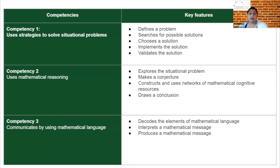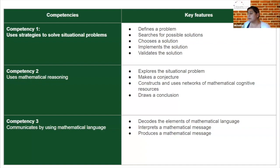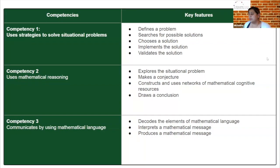Key features are the big headings of what's included in a competency. For Competency 1 - Uses strategies to solve situational problems - we're looking at defining a problem, searching a solution, choosing a solution, implementing the solution, and validating the solution. For Competency 2 - Uses mathematical reasoning - we're looking at the quality and detail of the thinking: exploring the situation, making conjectures, constructing and using a network of math cognitive resources, and drawing conclusions.